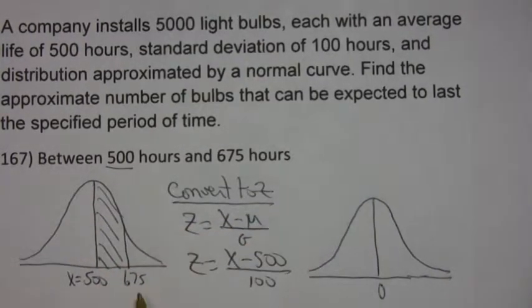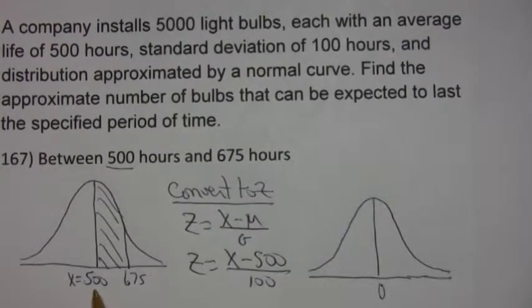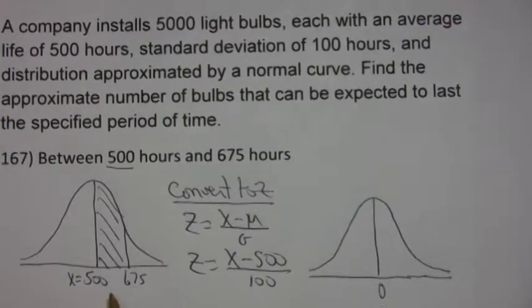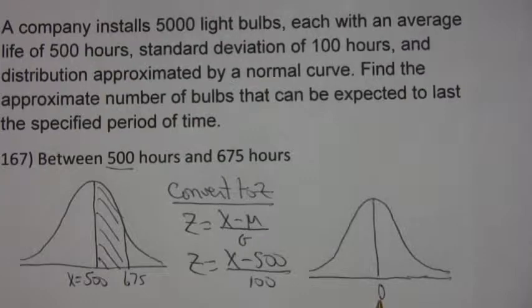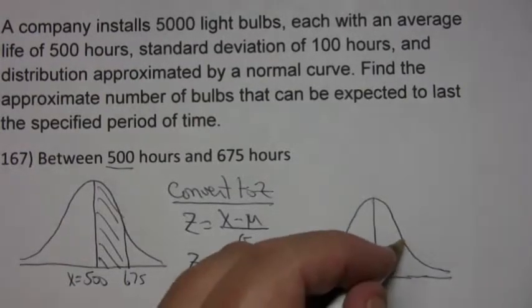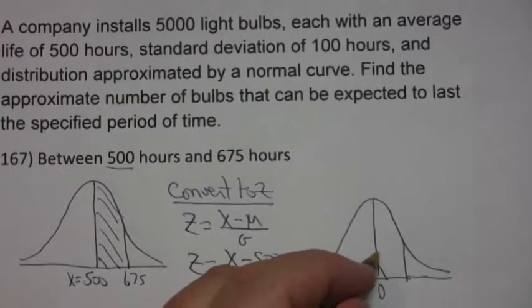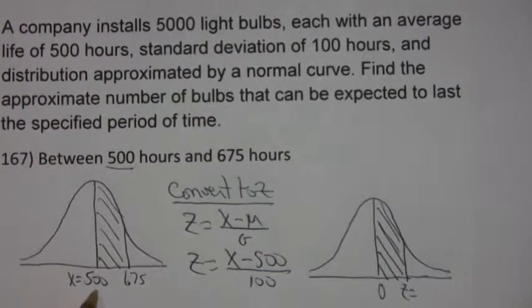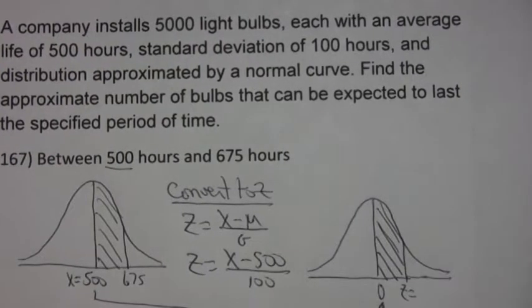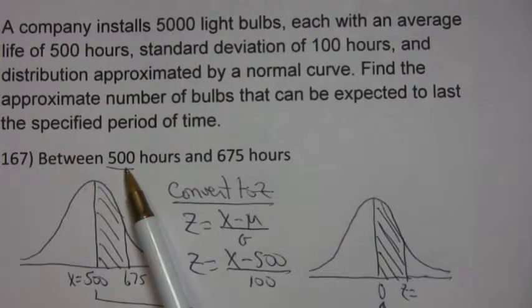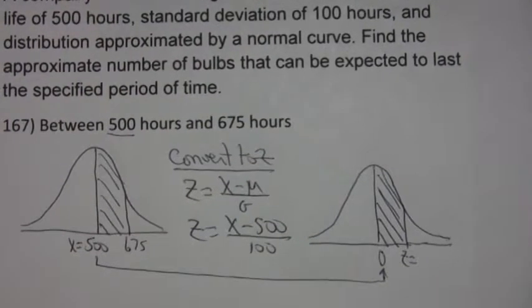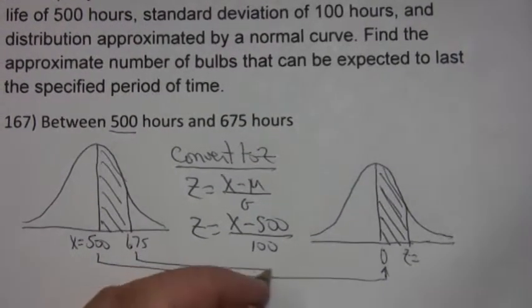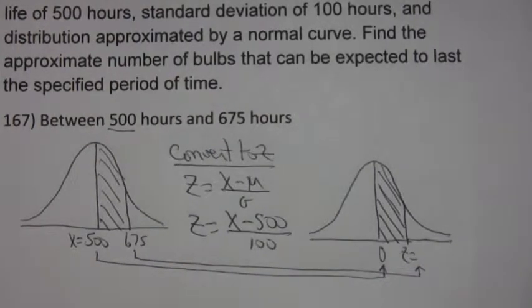whose mean is 0. I know that's going to be 500 minus 500, which is 0 divided by 100, so 0. So that 500 is going to convert exactly to 0. But I don't really know what 675 is going to convert to. I'm looking for that area right there. I just don't know what this 675 converts to yet.